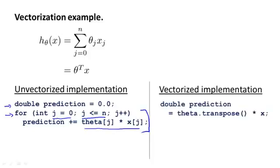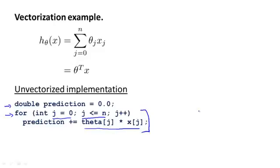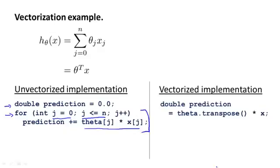In contrast, using a good numerical linear algebra library in C++, you can instead write code that might look like this. So depending on the details of your numerical linear algebra library, you might have a C++ object which is a vector theta, and a C++ object which is a vector x. And you just take theta dot transpose times x, where this times becomes a C++ overloaded operator, so you can just multiply these two vectors in C++. Depending on the details of your numerical linear algebra library, you might end up using a slightly different syntax. But by relying on the library to do this inner product, you can get a much simpler piece of code and a much more efficient one.